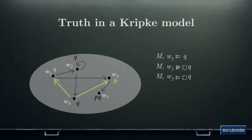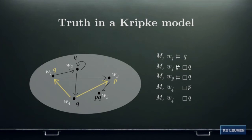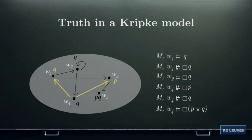Now consider W1 and W3, the worlds seen by W4. In W1, Q is true but P is false; in W3, P is true but Q is false. This implies that neither box P nor box Q is true at W4. However, what is necessarily true at W4 is their disjunction: box(P or Q) is true at W4, because the disjunction P or Q is true at W1 (Q is true there) and at W3 (P is true there) — so it's true in all worlds seen by W4.